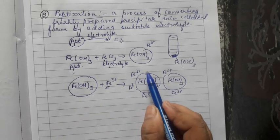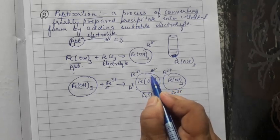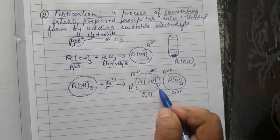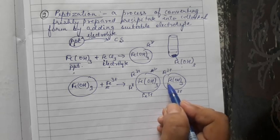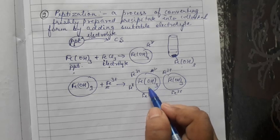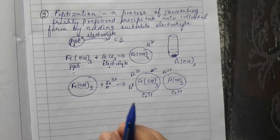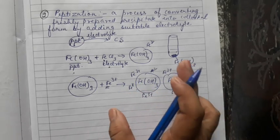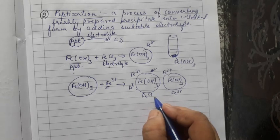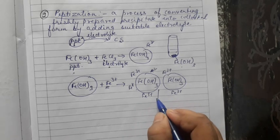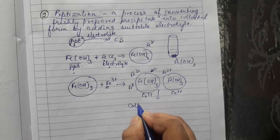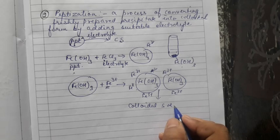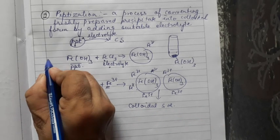Once the ferric ions are adsorbed, all of them carry positive charge. Like charges repel, so these particles get dispersed into the solution. This results in the formation of a colloidal sol. This is one example of peptization.